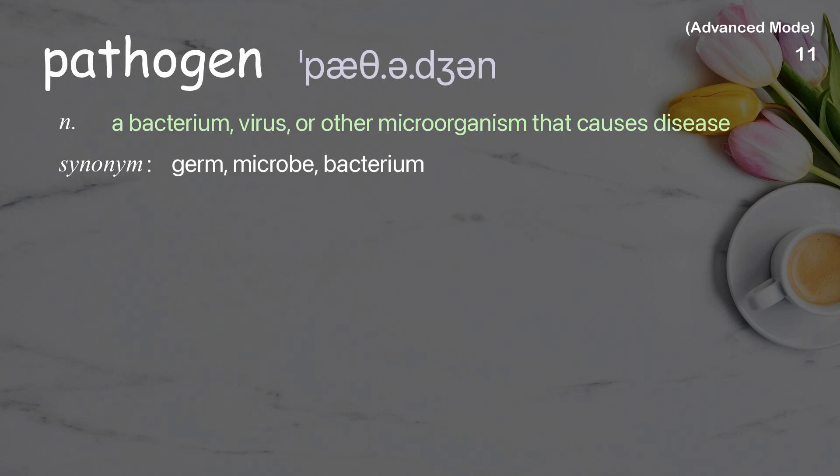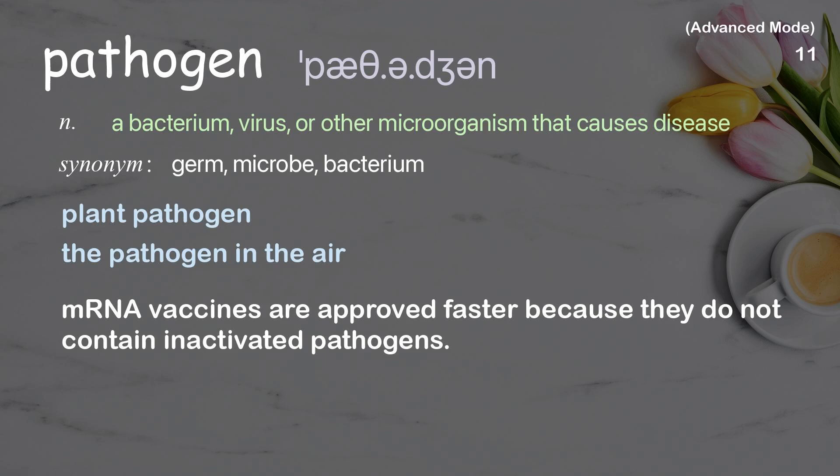Pathogen. A bacterium, virus, or other microorganism that causes disease. Examples: plant pathogen, the pathogen in the air. mRNA vaccines are approved faster because they do not contain inactivated pathogens.